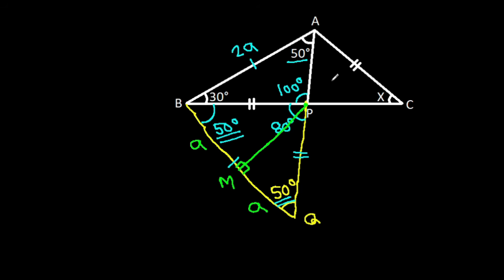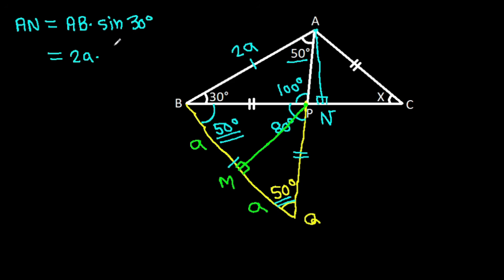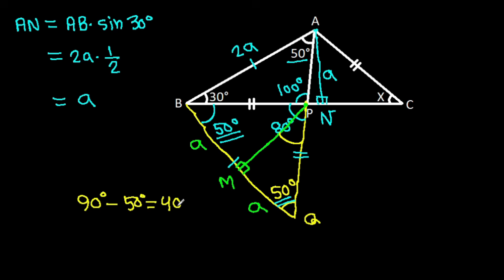From point A, if we make a perpendicular on BQ — suppose this point is N — then AN equals AB times sine 30 degrees. AB is 2A and sine 30 degrees is 1 over 2, so AN equals A. And this angle will be 90 degrees minus 50 degrees, that will be 40 degrees.